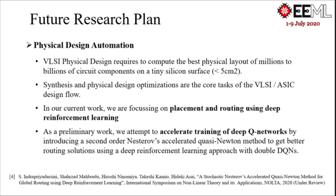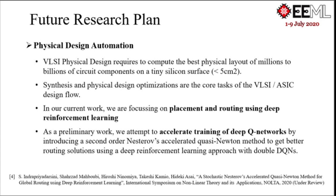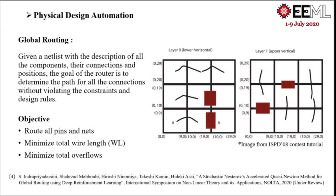One of the major challenges in supervised learning is the availability of labeled datasets. So, my current work on physical design automation focuses on a deep reinforcement learning framework for placement and routing, the two core tasks in synthesis and design. As a preliminary work, a deep RL framework with double DQNs trained using an adaptive stochastic NAC method was proposed for global routing of two-pin nets.